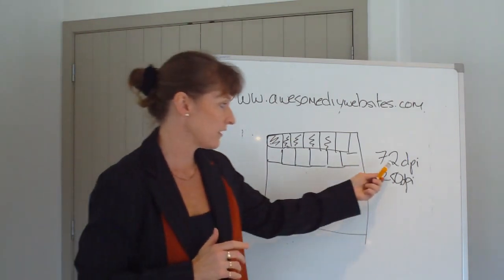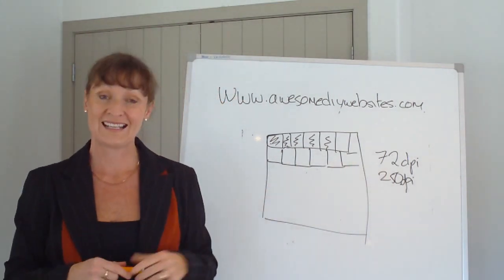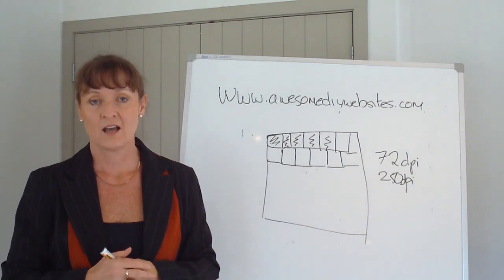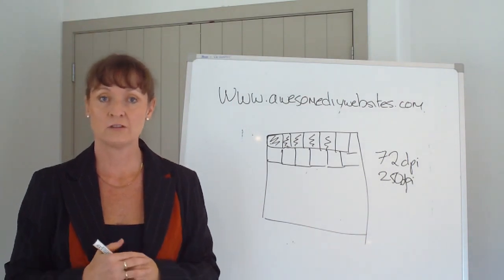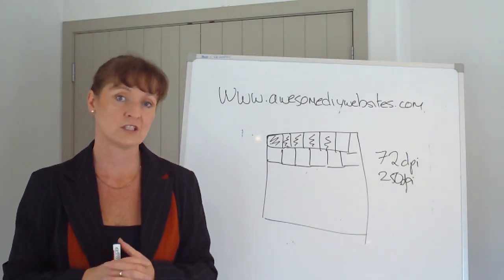The reason that we ask for 72 dots per inch is that everything that you get to see on the internet picture-wise is 72 dots per inch. It's just your screen resolution is set at that.